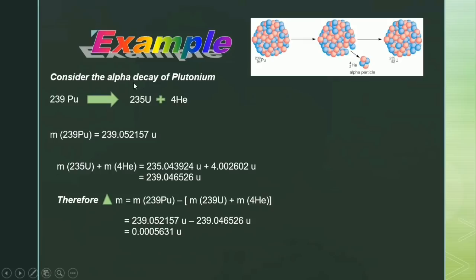Now we will consider the example of alpha decay of plutonium. When plutonium decays into daughter nuclei uranium-235 and helium, a large amount of energy is released. From this equation we will calculate the masses of the particles: the mass of plutonium-239 is 239.052157 atomic mass units, and the mass of uranium-235 is 235.043924 atomic mass units.